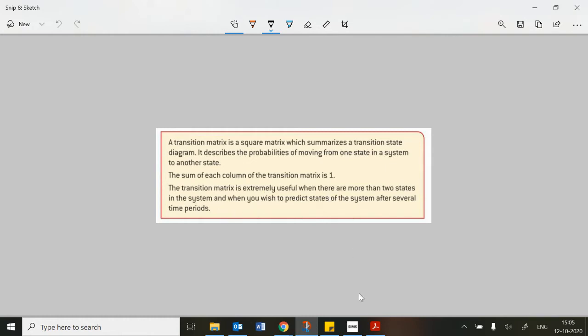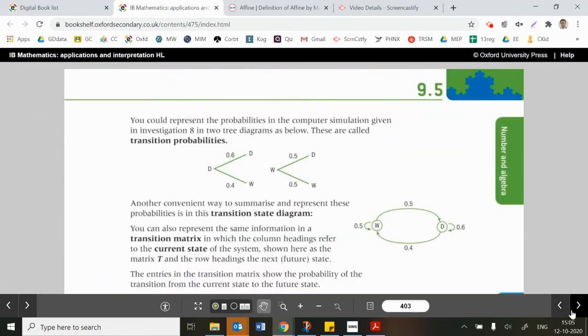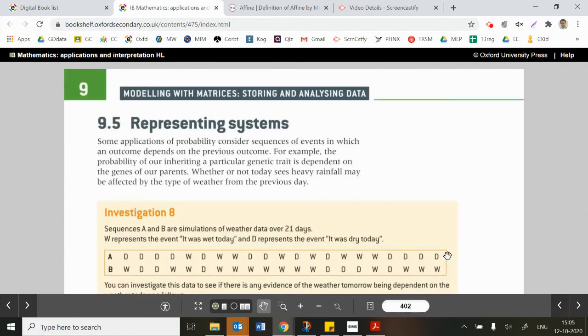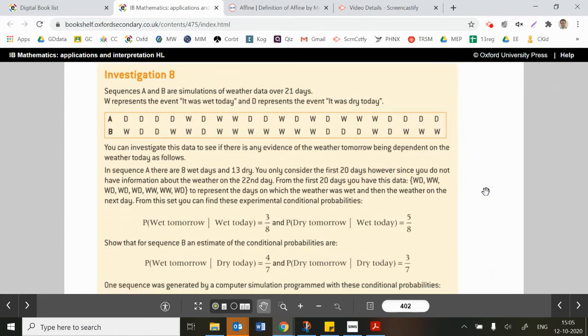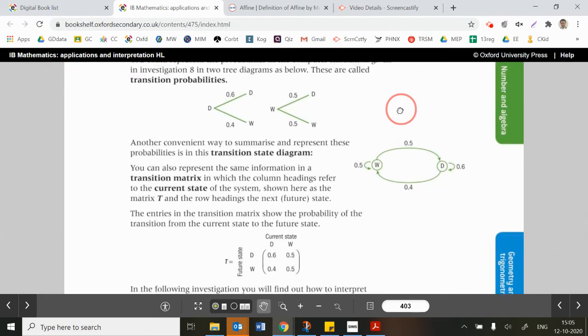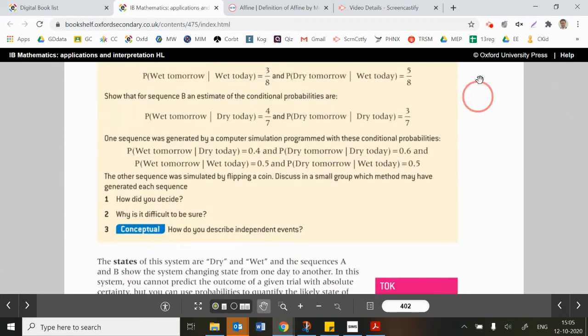The sum of each column of the transition matrix is one. That's basically the sum of your probabilities. And the transition matrix is extremely useful when there are more than two states in a system and when you wish to predict states of a system after several time periods. So that's going to be pretty good to do on your calculator. So let's just look at, just go back a bit. So this is pretty useful here. They're talking about probabilities of it being dry or being wet on a day after it's already been dry the day before. And this comes from a whole set of statistics here, which is an investigation. But ultimately, just the theory is fine here.